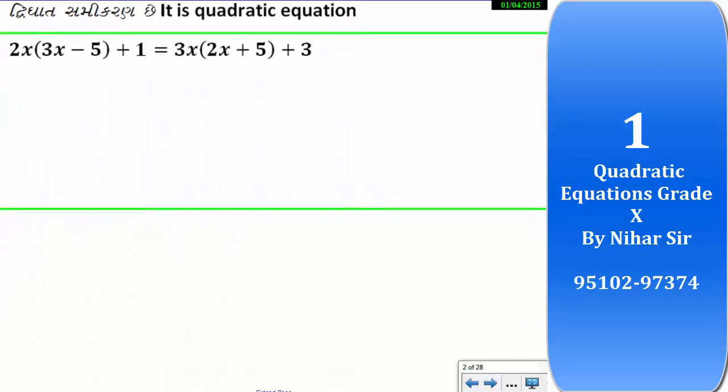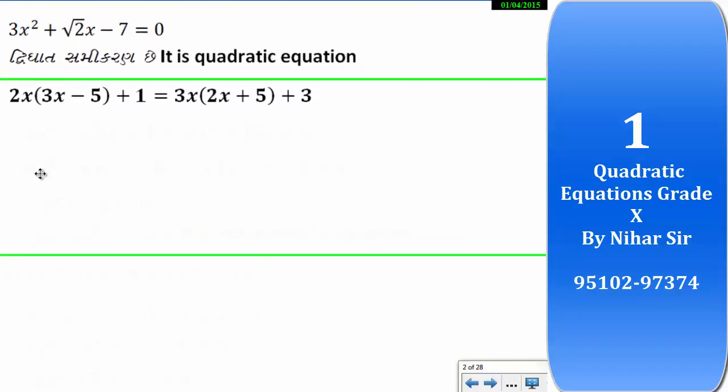Here, we have to simplify it first before we decide whether it is quadratic or not. So, this 2x is with both. If there is no sign here, consider it is multiply with both. Same way here, with both. Okay?